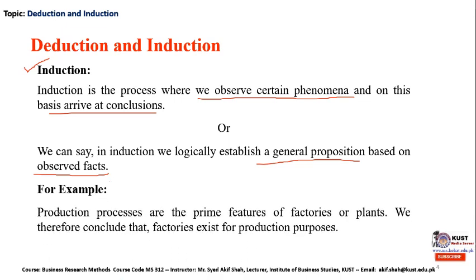For instance, production processes are the prime features of factories or plants. Anybody who visits any production company, factory, or plant might observe that certain manufacturing activities are going on and products are being made to be sold in the market. With this observed fact that factories are generally involved in manufacturing, we can conclude that factories generally exist for production purposes. What the researcher does is to observe the features available in factories practically and then conclude that factories exist for production purposes.